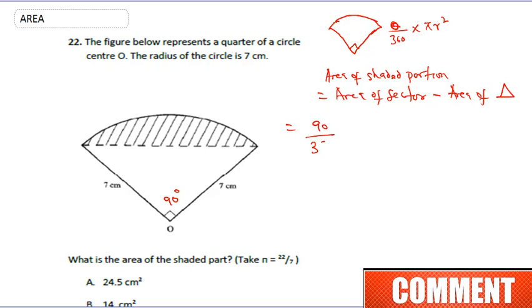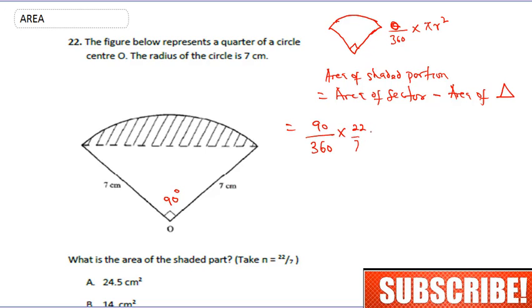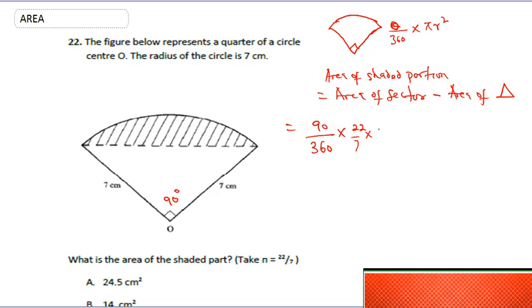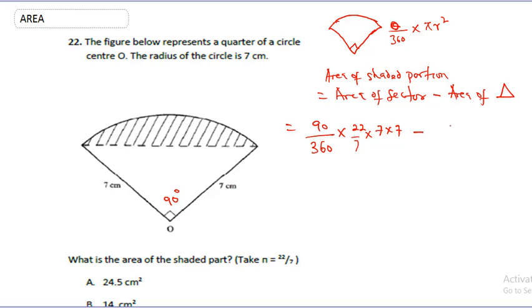Now we can apply the formula. The angle is 90 over 360, times pi (which is 22 over 7), times radius squared (7 times 7). Then we subtract the area of the triangle, which is half times base times height — that's half multiplied by 7 cm multiplied by 7.